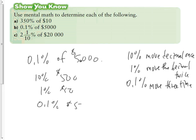So what is one-tenth of a percent of $5,000? It is $5. And the last one.